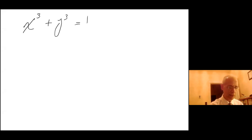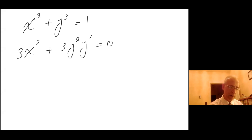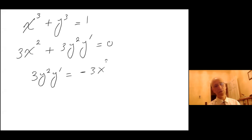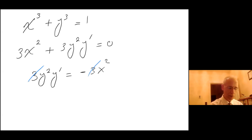Starting from the left hand side I have 3x squared plus 3y squared y prime equals 0. So 3y squared y prime equals minus 3x squared. Dividing both sides by 3, we get y prime equals minus x squared over y squared.